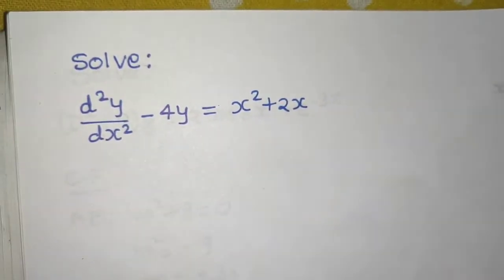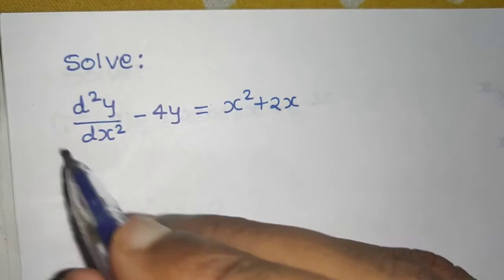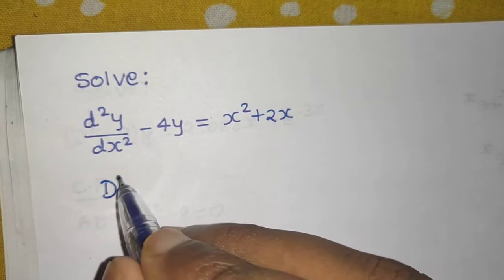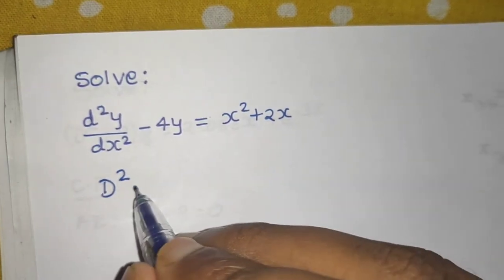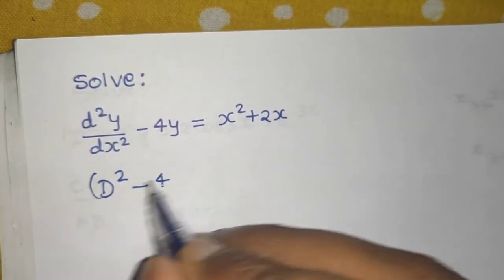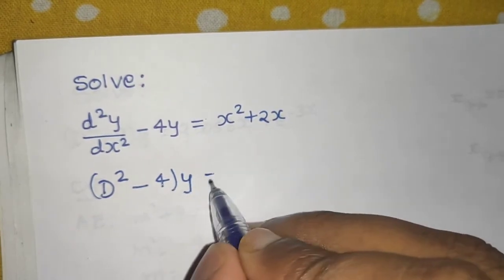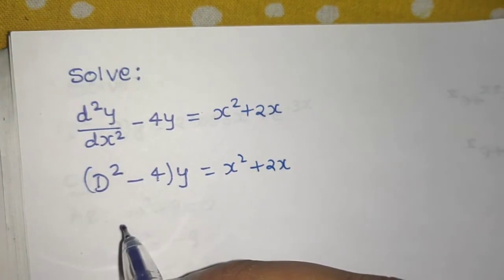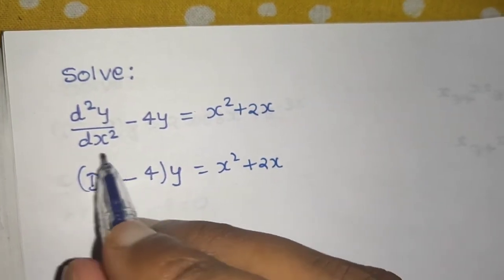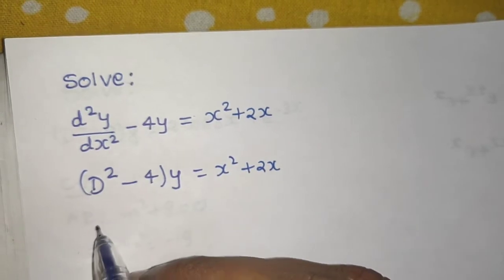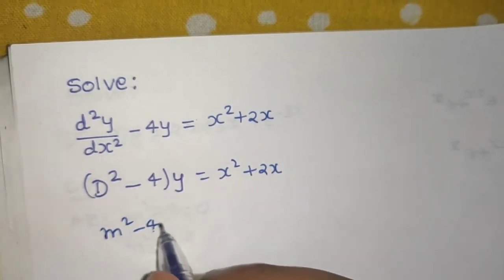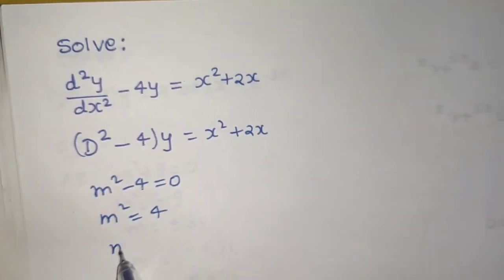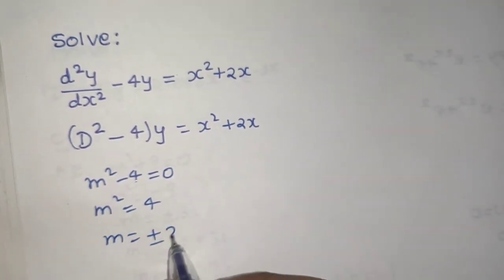First of all, for the complementary function, convert it from operator form to D-form. I can write this as D² minus 4, operating on y, equals x² plus 2x. Now, find the auxiliary equation by converting from D to m: m² minus 4 equals 0, so m² equals 4, giving m equals plus or minus 2.